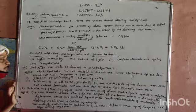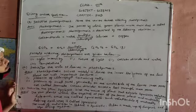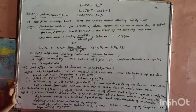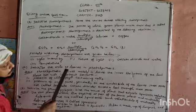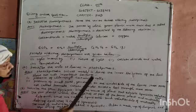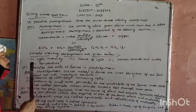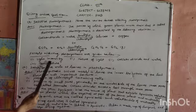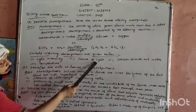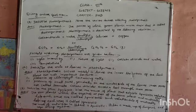Factors affecting photosynthesis are given below: first, light intensity; second, nature of light; third, carbon dioxide and water; and fourth, temperature.